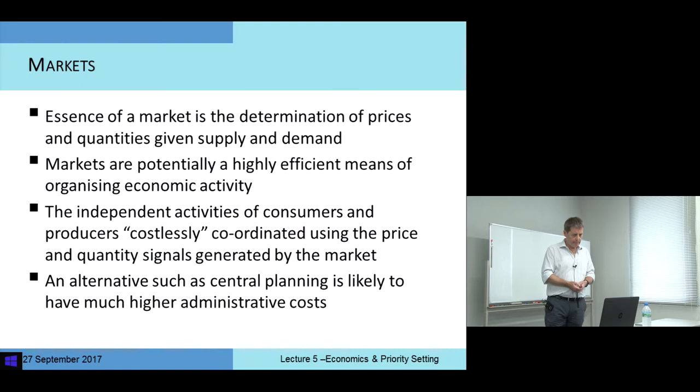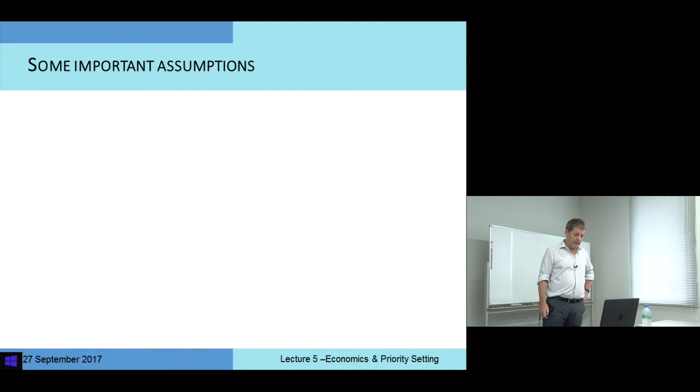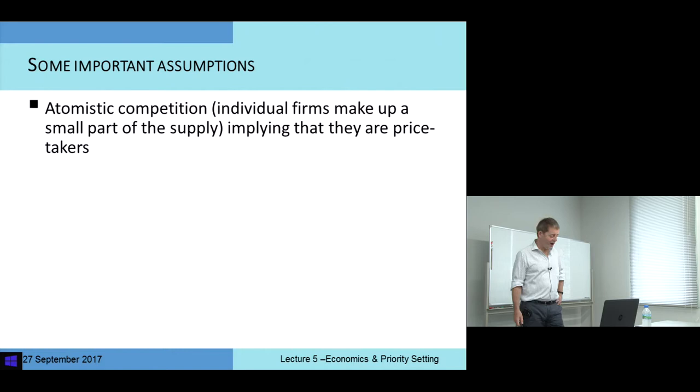There are alternatives to markets. One alternative is some sort of central planning where government or government departments determine quantities and prices. But any of these alternative systems are likely to be much more costly to operate. I am talking about markets that function well, and in order for markets to function well there are a number of assumptions that we require. I won't go through them all, but I'll highlight some of them.